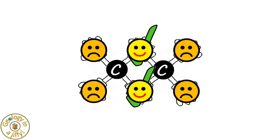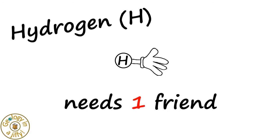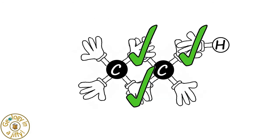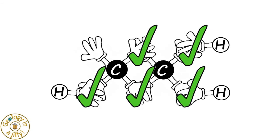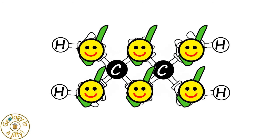However, the unheld hands are still not stable or happy, but knowing that hydrogen only needs one friend, or electron, to be stable. If we add one hydrogen atom, then another, then a third, then a fourth, we see that both carbon atoms are now stable, so all atoms are happy.